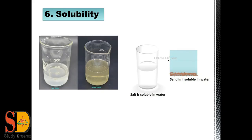The next property is solubility. Solubility means the ability of a material to get dissolved in water. Based on solubility, materials are grouped into two categories: soluble and insoluble. Materials which are completely dissolved in water are known as soluble materials. For example, salt is completely dissolved in water and sugar is completely dissolved in water, so these are examples of soluble materials.